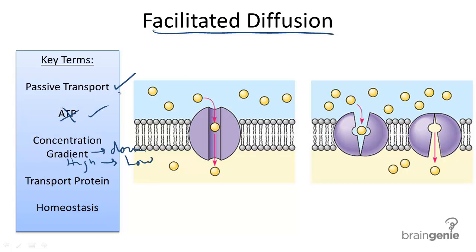Facilitated diffusion differs from diffusion in the sense that it uses a transport protein located in this picture in purple. The purpose of facilitated diffusion, as with any method of cell transport, is to maintain homeostasis or balance in the body.